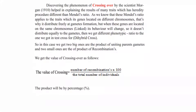Discovering the phenomenon of crossing over by scientist Morgan helped in explaining results of many traits which were inherited in a procedure different from Mendel's ratio. As we know, Mendel's ratio applies to traits whose genes are located on different chromosomes. Each trait that Mendel studied was located on a different chromosome, allowing free distribution. Because traits located on the same chromosome are linked, they are not free and not independent of one another. So all Mendelian traits are located on different chromosomes — that's why they distribute freely at gamete formation. But when genes are located on the same chromosomes, meaning they are linked, their behavior changes, and they do not distribute equally to the gametes.